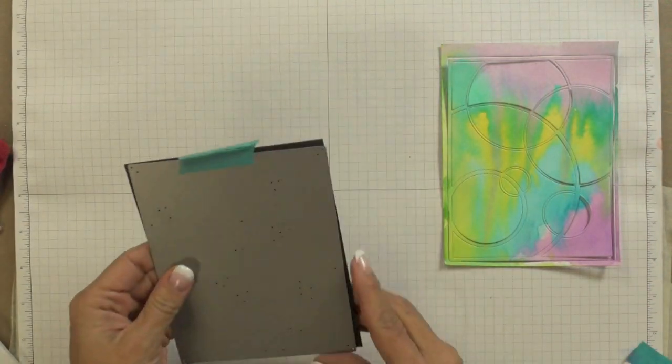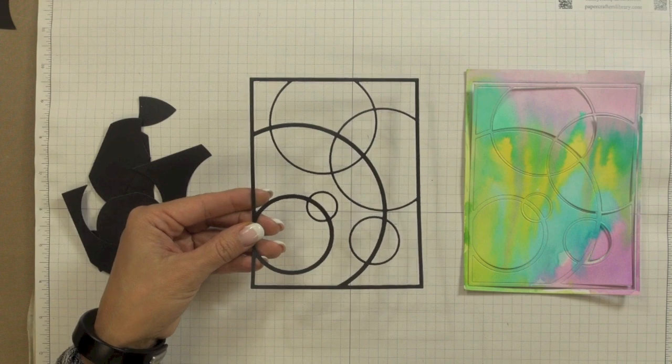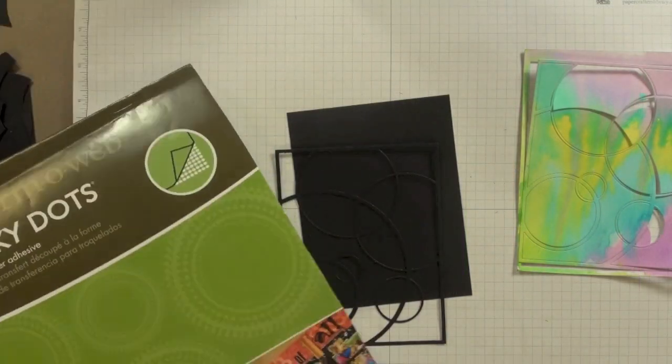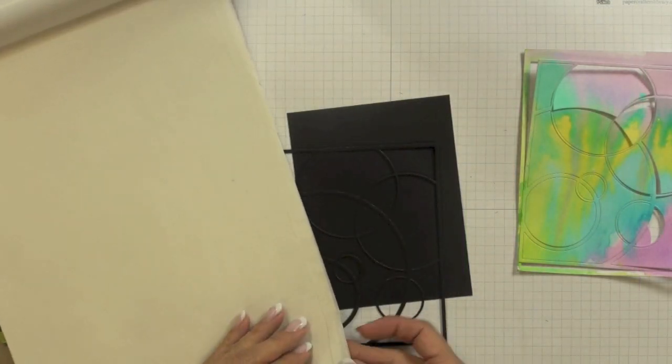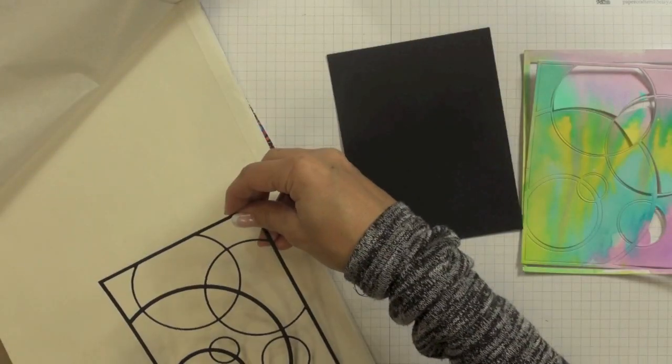I then took that exact same die and die cut it from a piece of black Simon Says Stamp cardstock. Now in order to inlay my die cut pieces I thought it would be easier if I took my black mod circle frame and stuck it to a black cardstock panel.